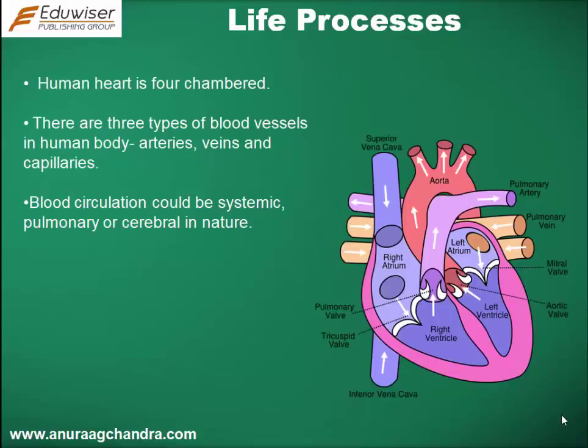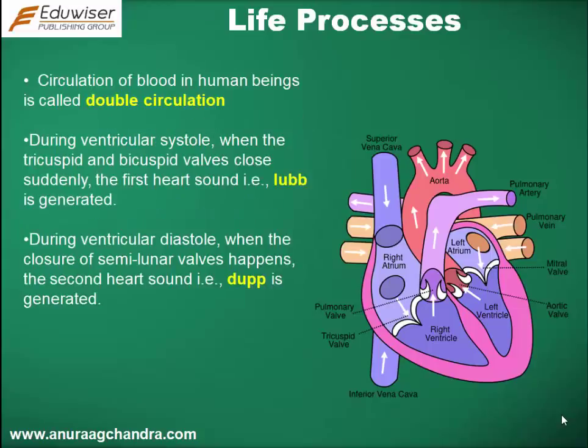Human heart is four-chambered. There are three types of blood vessels in the human body: arteries, veins, and capillaries. Blood circulation could be systemic, pulmonary, or cerebral in nature. Circulation of blood in human beings is called double circulation.